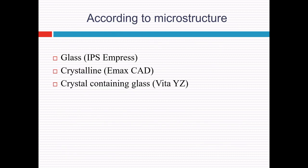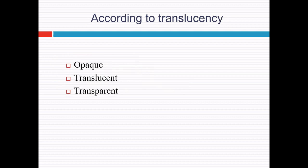According to microstructure, ceramics can be classified as crystalline, non-crystalline (amorphous solids or glasses), and crystals that contain glass. The mechanical and optical properties of dental ceramics depend on the nature and amount of crystalline phase present. Based on translucency, ceramics can be opaque, translucent, or transparent.